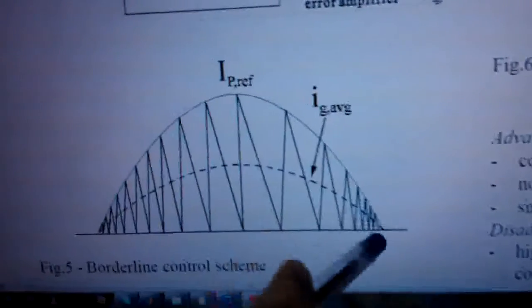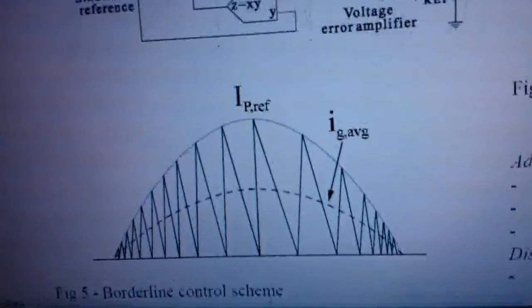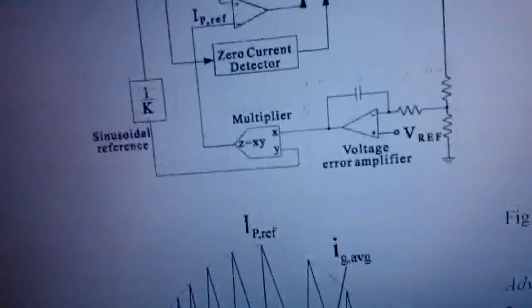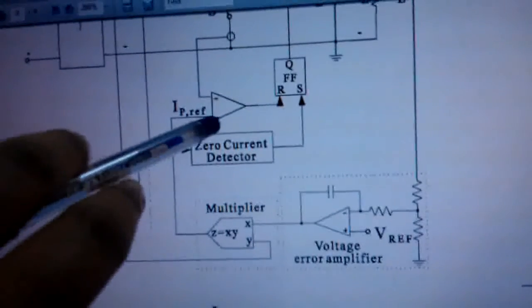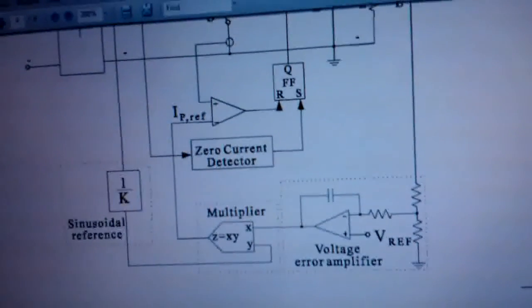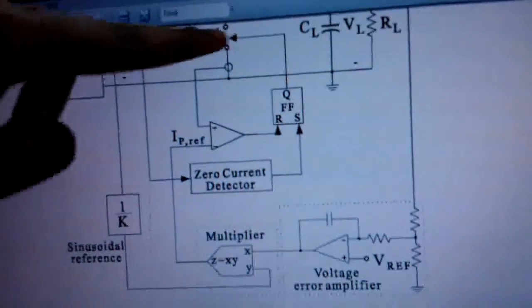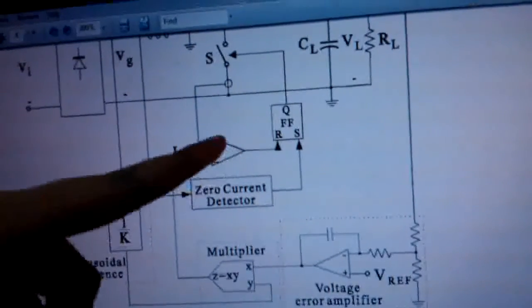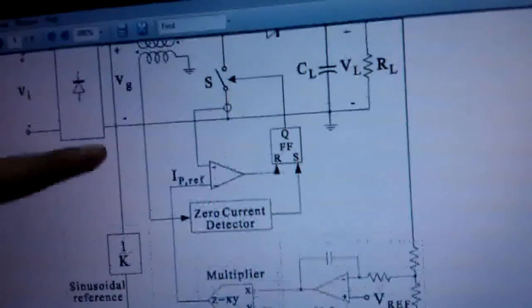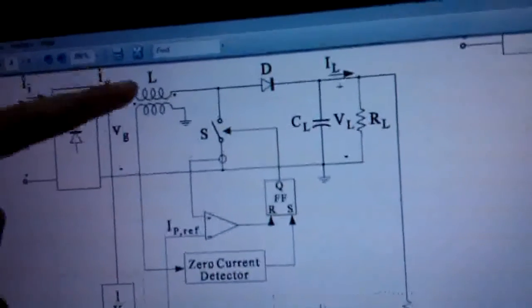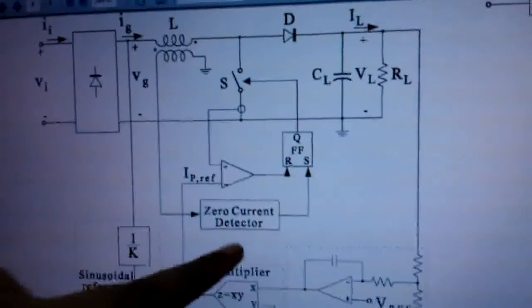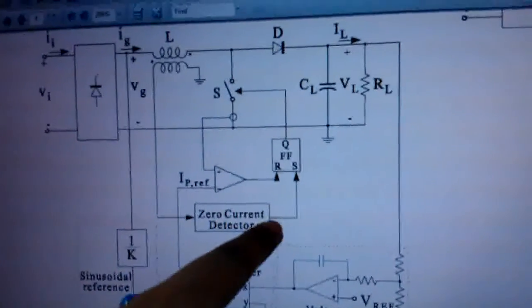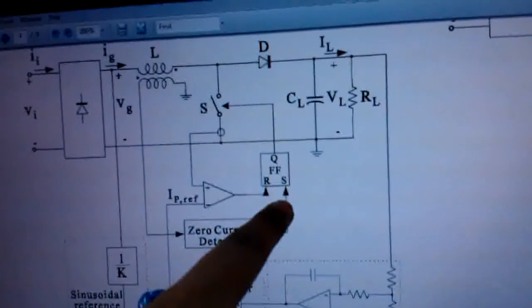This is the IP reference waveform. This IP reference waveform or signal is given to the negative terminal of the comparator. Current flowing through the MOSFET is given to the positive terminal of the comparator. The zero crossing of inductor current is sensed by using a zero current detector. The output of this zero current detector and comparator are given to the SR flip-flop.